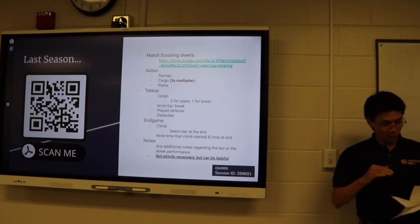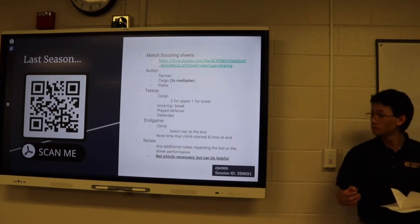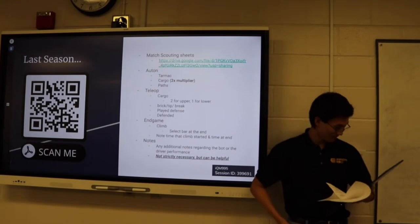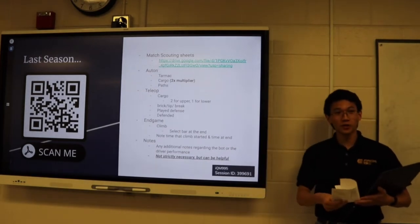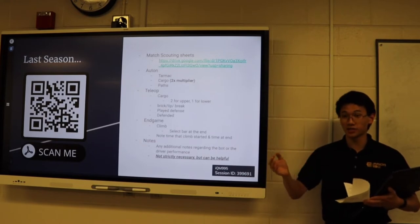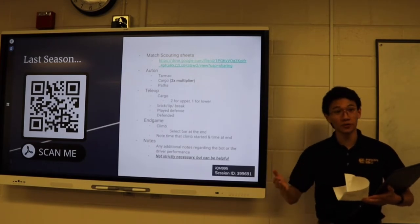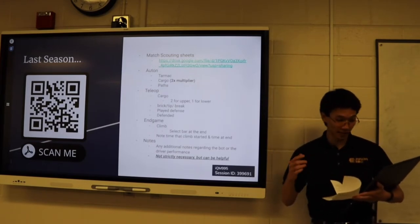So starting on the brick-tip-brake, that is anything that happens to the robot that will cause it to stop functioning. If the robot just altogether disconnects from the controller, that's a brick. If a part of the bumper comes off and it can't drive around anymore, that's a brick.